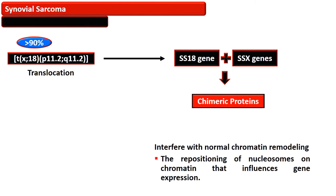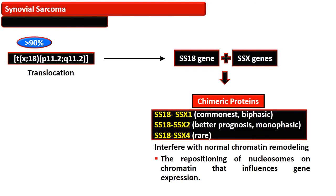The repositioning of nucleosomes on chromatin that influences gene expression is disturbed. There are three types of chimeric protein. SS18-SSX1 is the commonest, present in about two-thirds of cases, and is morphologically presented as a biphasic pattern. SS18-SSX2 chimeric protein is associated with better prognosis and its morphology is monophasic.